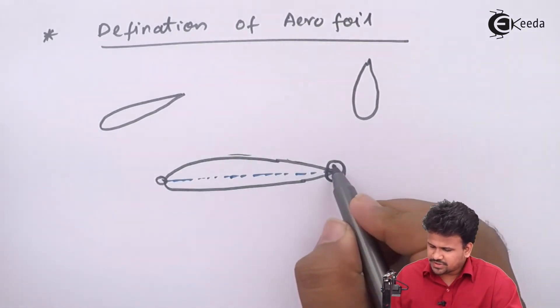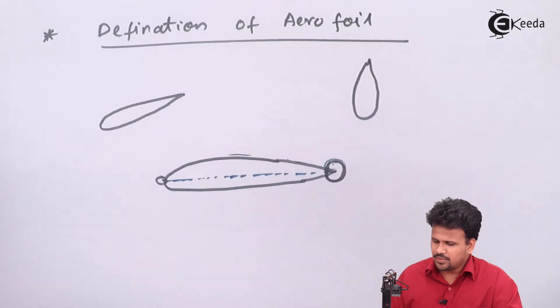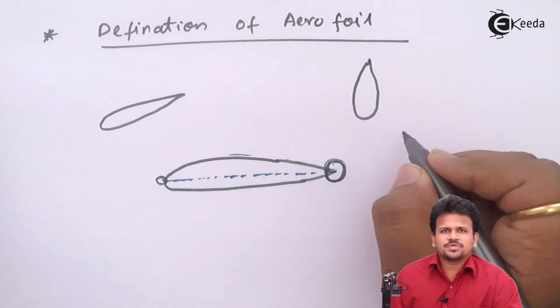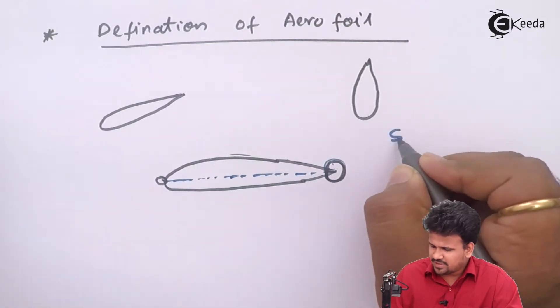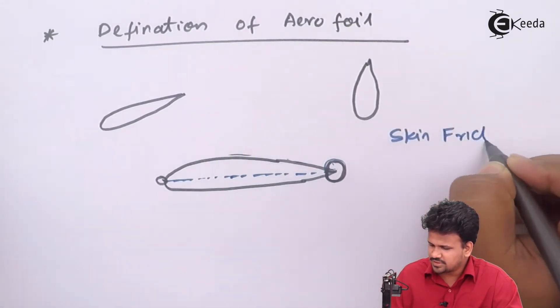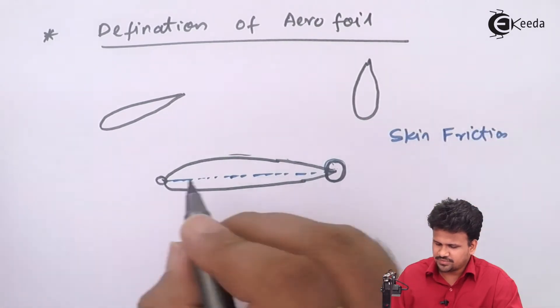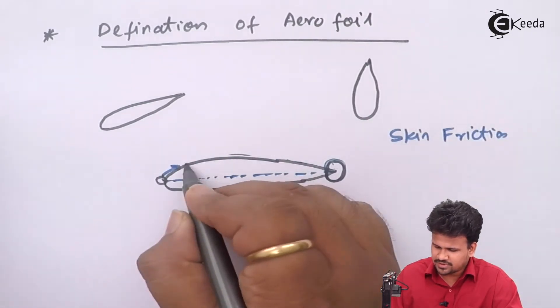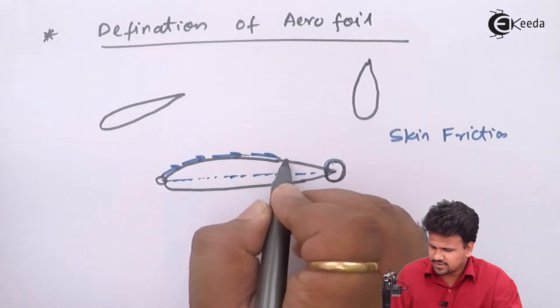Now the boundary layer separation will not occur till the very end, due to which there will be only one friction acting on the body - that will be skin friction. Now this skin friction is friction on the surface of the body.